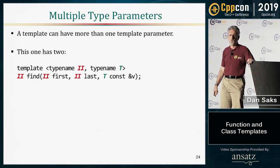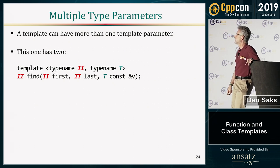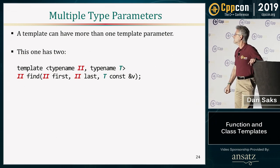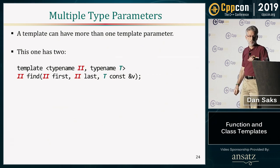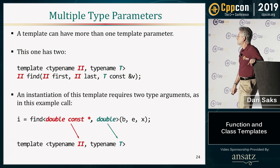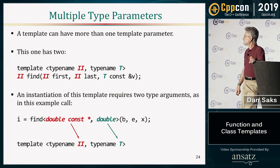A template can have more than one type parameter. There's a function very similar to this in the standard library — a searching algorithm that finds everything from a first iterator to a second iterator looking for a value of type T. The collection being searched is identified by an iterator type, and the value being searched for can be a distinct type. There's no real bound on the number of template parameters, other than your ability to deal with it mentally. When instantiating the find function, you'd provide type arguments for each type parameter.